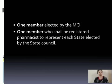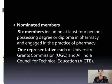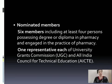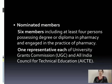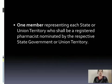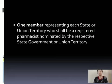Now coming to the nominated members: six members including at least four people who have the degree or diploma in Pharmacy and are engaged in the practice of Pharmacy. One representative each of UGC, that is University Grants Commission, and AICTE, that is All India Council for Technical Education. Then one member should represent each state or each union territory, and shall be a registered pharmacist nominated by the representative of the state government or of the union territory.